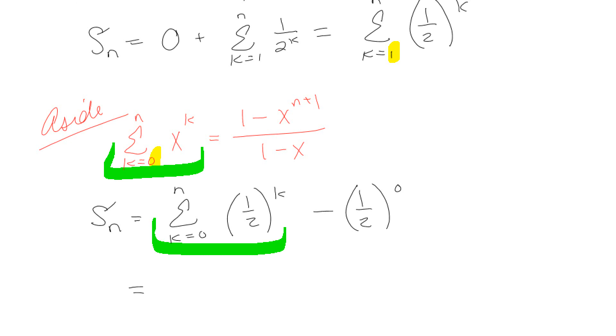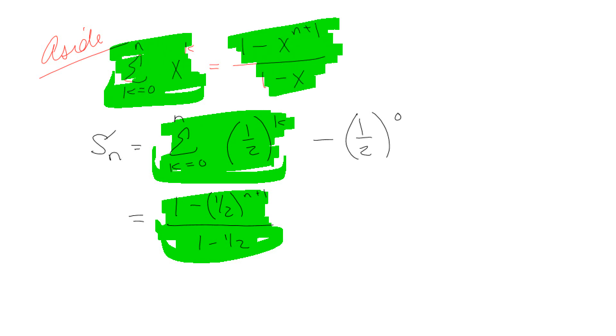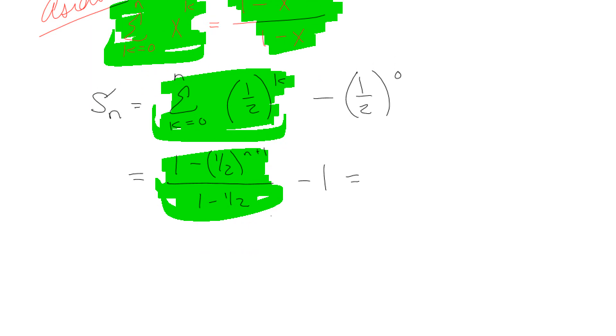So we have S_n. Now we're going to write this starting at k equals 0 going to n of (1/2)^k. But since we started at 0, we need to subtract off the zeroth term because we have an extra zeroth term, which isn't a big deal because that's just a 1. So all this here, that matches this. So now we're going to plug in the other side of that red equation. So we have 1 minus (1/2)^{n+1} over 1 minus 1/2 and then minus 1. And there we go.